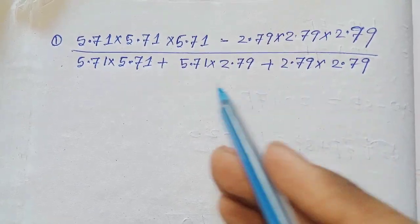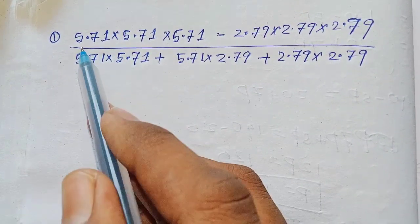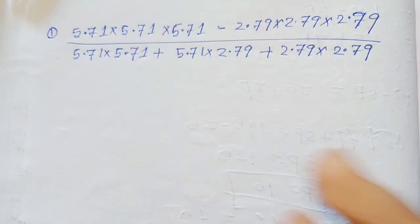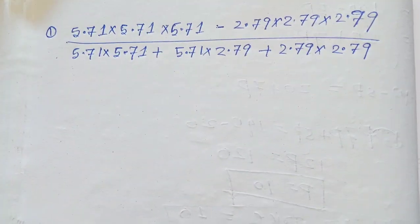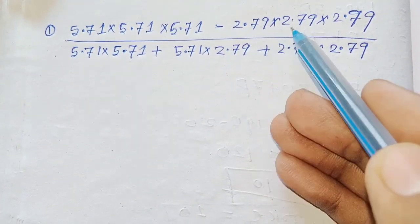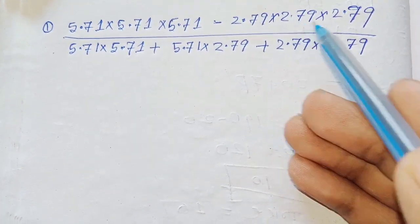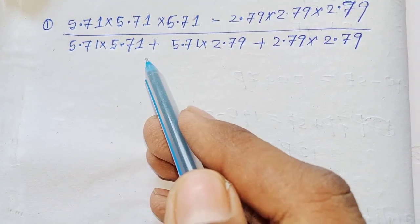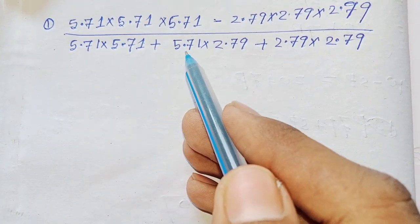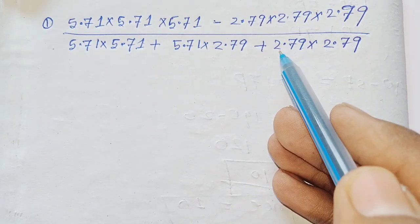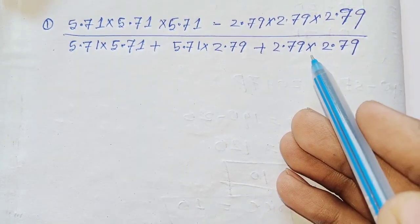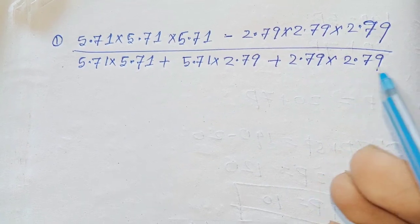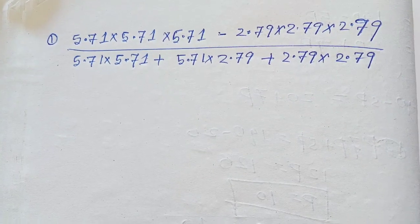Now friends, solve this question and tell me the answer in the comment box. The question is: (5.7 × 5.7 × 5.7 − 2.79 × 2.79 × 2.79) divided by (5.7 × 5.7 + 5.7 × 2.79 + 2.79 × 2.79). Let me know the answer in the comment section. Thank you friends!